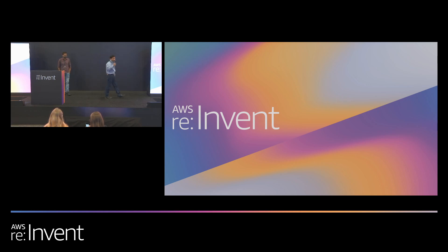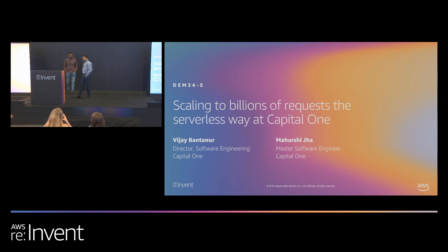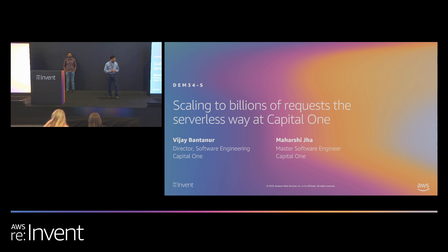My name is Vijay, I'm a director at Capital One. I take care of a couple of tech and business initiatives. My name is Maharshi and I'm a master software engineer for Capital One. Today we are talking about how we built a solution that could scale to billions of transactions, and how we were able to make it happen with simple AWS services — just a pattern, an architecture, and how we successfully implemented it to handle large volumes of data.